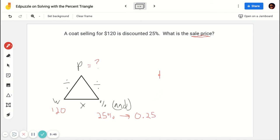So to find the part, I'm going to do $120 times 0.25. And that's going to give me an answer of $30. But remember, that's what's discounted. So I need to take the $120 and subtract $30 from it. And that would give me $90. And that should be my answer.